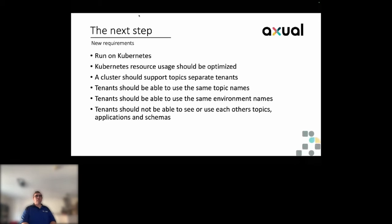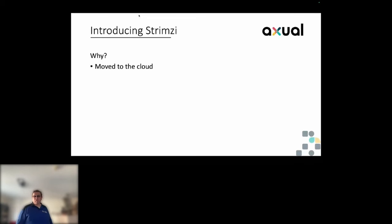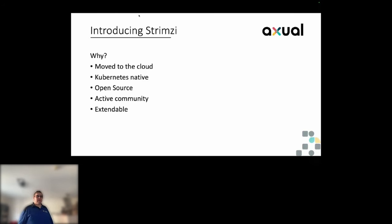To survive these new requirements, we started by introducing Strimzi. We moved to the cloud for our solutions — VM-based deployments aren't a problem, but Kubernetes was the future and it's very easy to deploy and maintain infrastructure that way. Strimzi is open source with a very active community, and very importantly it's extendable and configurable. They have their own way of doing things but give you the option to do it your own way if you have different requirements.